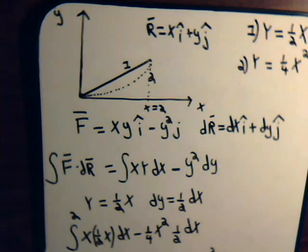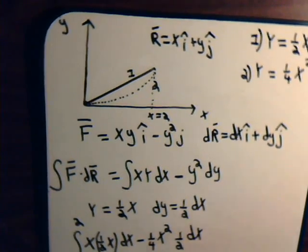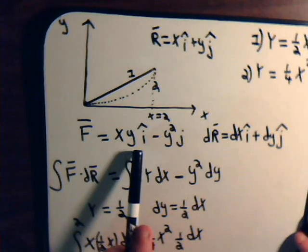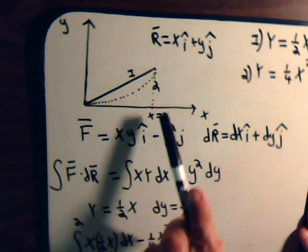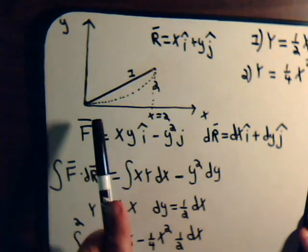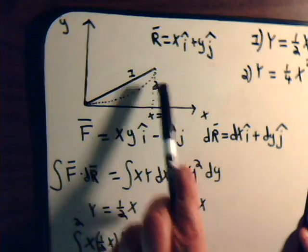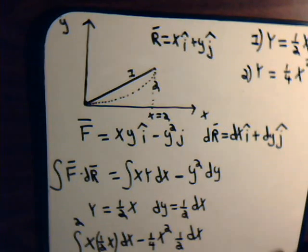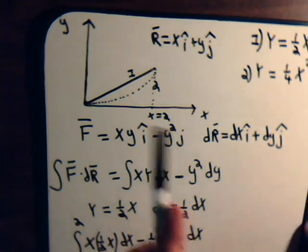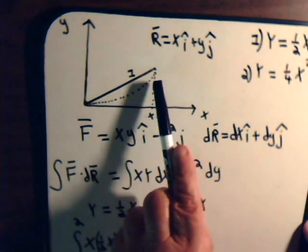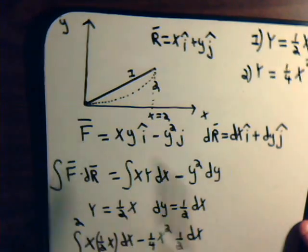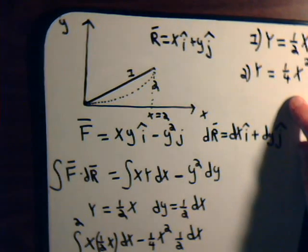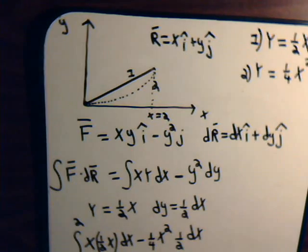Now, if we consider this same vector and we're going to start at x equals zero and go out here to where x equals two, but instead doing it along this curve, will that give us the same result? Here, taking that line integral about the straight line, that gave us an answer of one. If we do it about this curve, y equals one-fourth x squared, what kind of an answer do we get then?